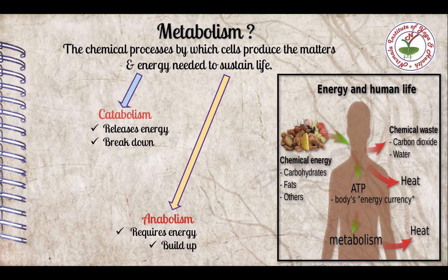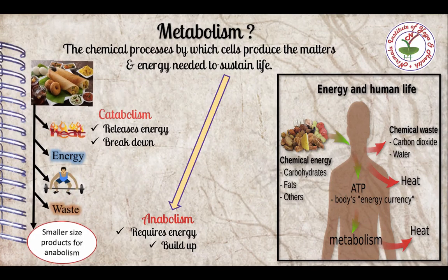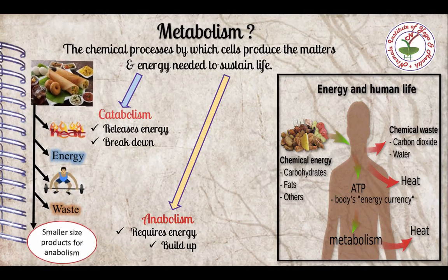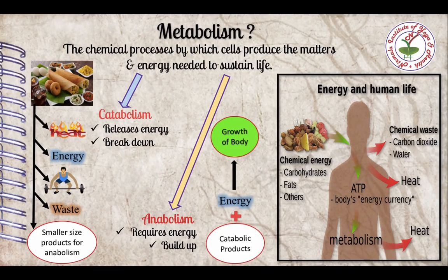Basically, it has two processes. First process is catabolism. In this, energy is released as well as larger molecules are broken down into smaller molecules as per need. Along with this, heat is generated, the body does its work and also removes some waste products. Second process is anabolism. In this, energy is required. Energy and catabolic products are used in this process for maintenance and growth of the body. Anabolism is responsible for synthesis in the body.